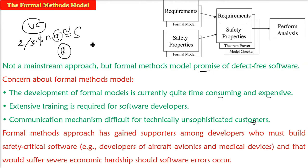These formal methods are used where you are making safety-critical software. For example, developers making aircraft avionics software or medical devices where life and death is involved. And where if the software fails, there will be a hard economic hit on the company. That is why we use the formal methods model—where life, death, and immense economics are involved.